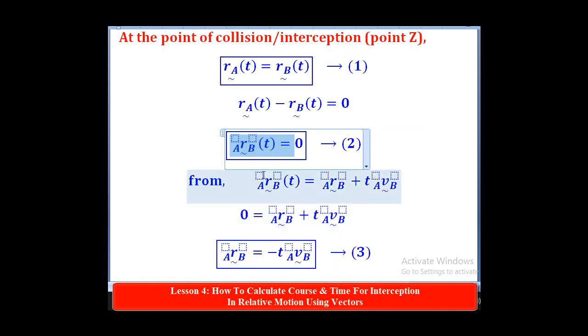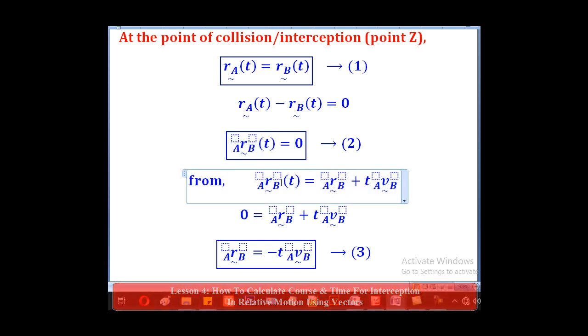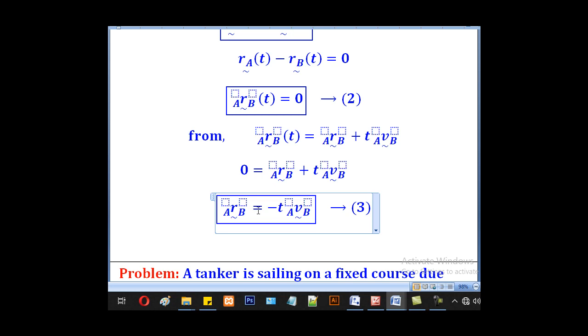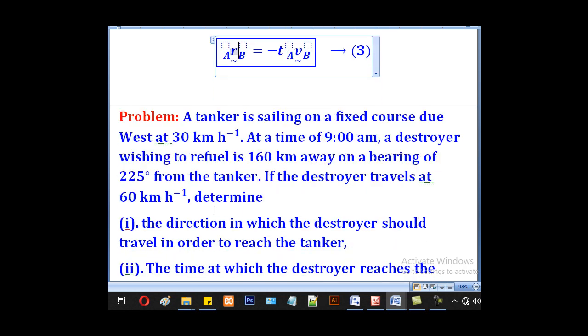What about the third one? From RAB(T) being equal to this, when we substitute 0 here, we shall get this. And when we take this one on the other side, we shall get that. So what does that mean? It means that at the point of collision, the relative displacement initially is parallel but opposite to relative velocity. We shall use this knowledge under geometry.